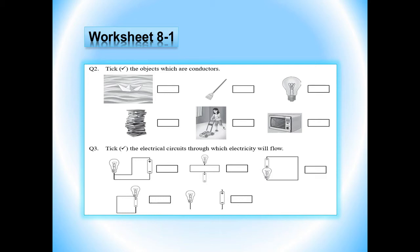Now let's start question number 2. Question number 2 is: tick the objects which are conductors. The pictures are given, so you will see the picture and tick the objects which are conductors. Picture number 1: the bot in the water — since water is a conductor, you will tick this object. Number 2 is bulb — yes, bulb is a conductor, so tick the bulb. And the third one is microwave — yes, you will tick the microwave. Here our question number 2 is done.